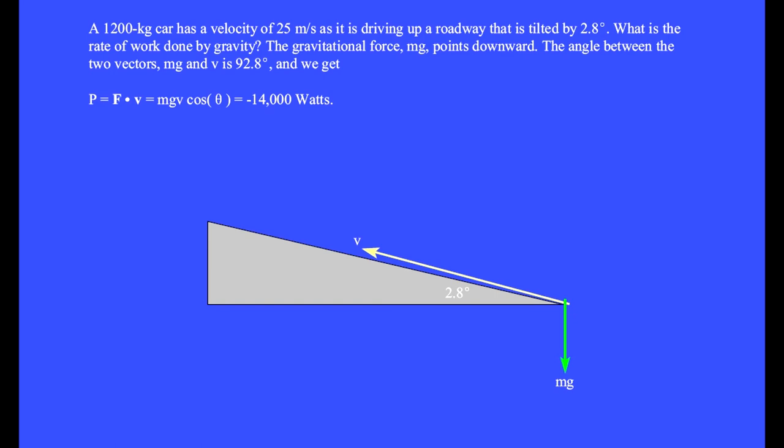The gravitational force, Mg, points straight downward. The angle between the two vectors, Mg and V, is 92.8 degrees. And we get power equals F dot V equals Mg V cosine theta equals minus 14,000 watts.